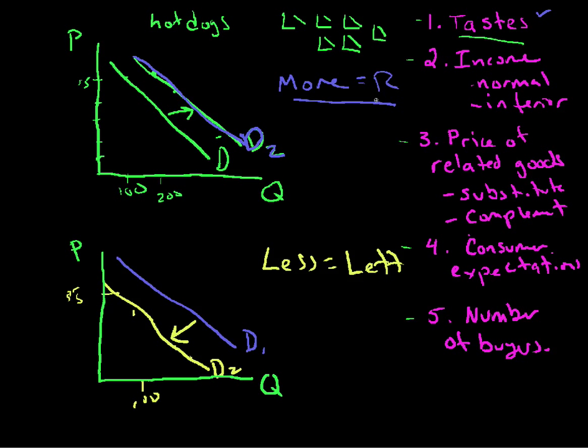You notice I'm not saying up or down because if you say up or down, it's going to get you in problems later. Less equals left. More equals right. So if all of a sudden hot dogs give you a bad heart, you eat fewer of them and demand shifts to the left. Less hot dogs. Now that's taking care of this taste. This is the easy one. More right, less left.